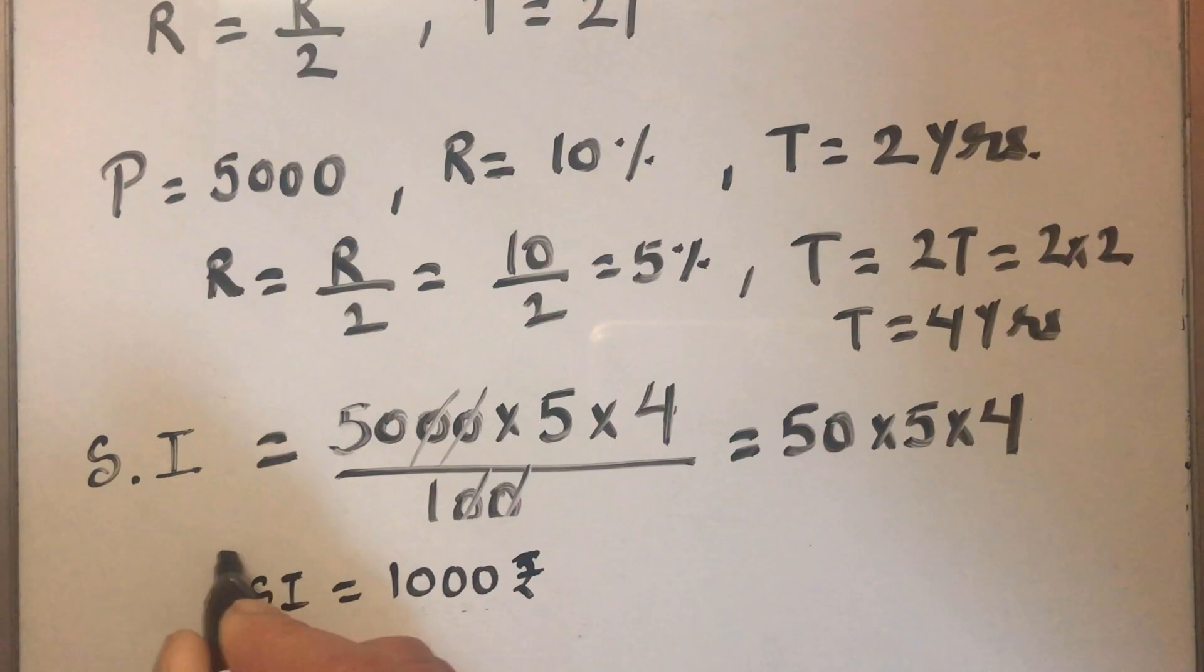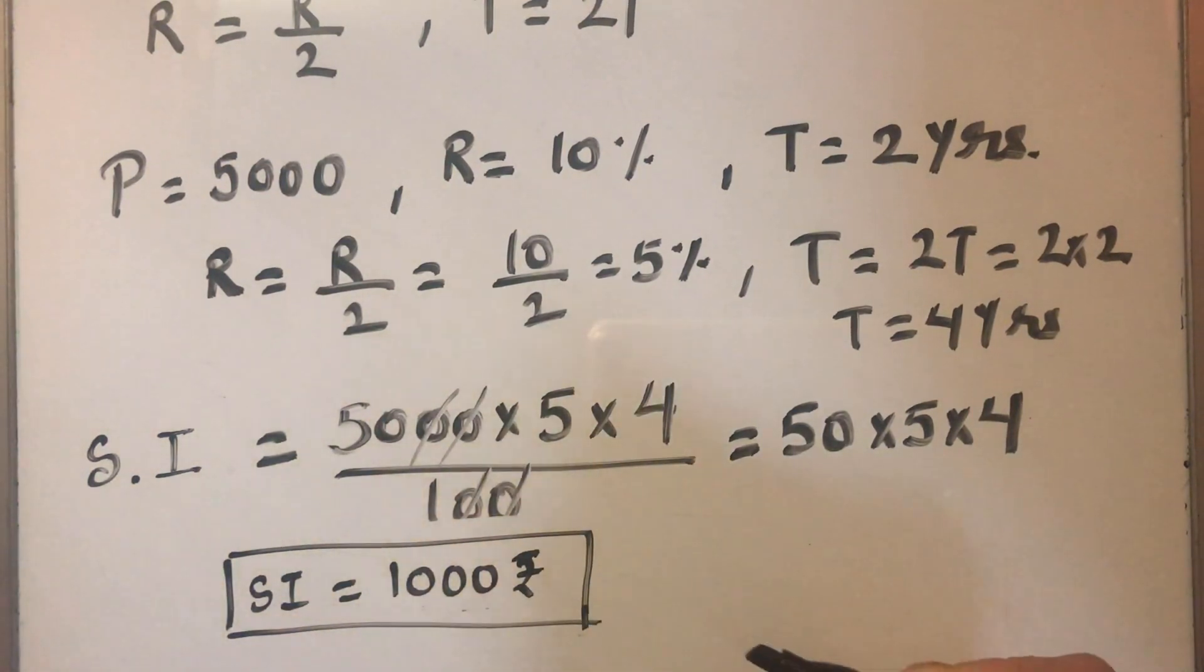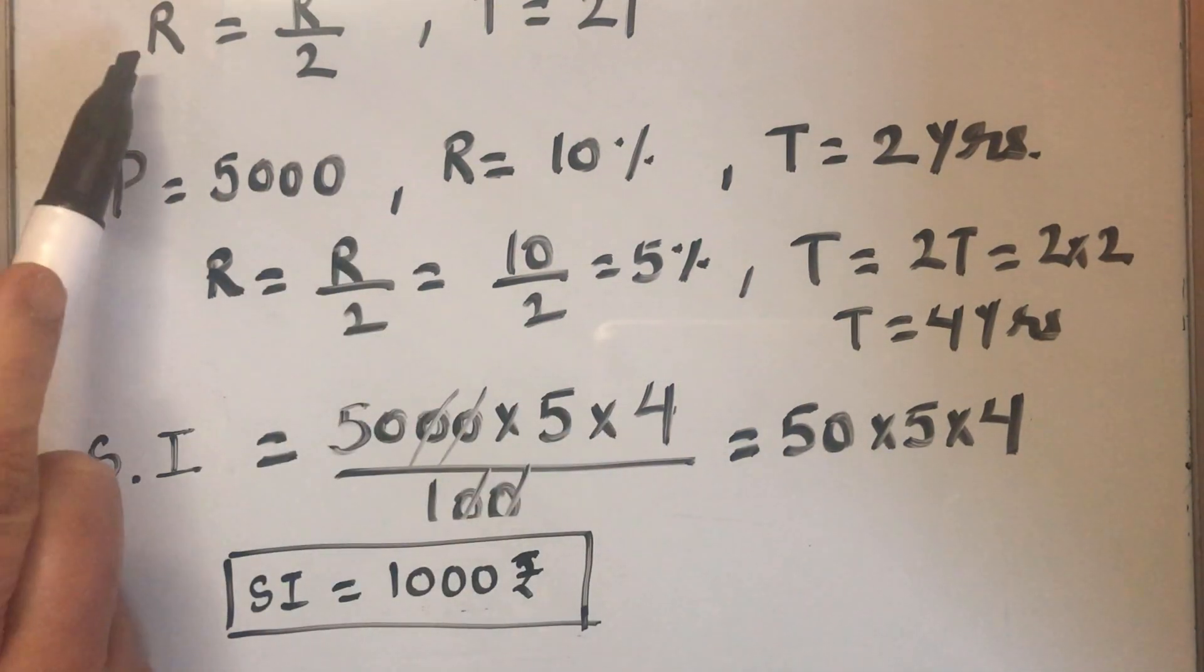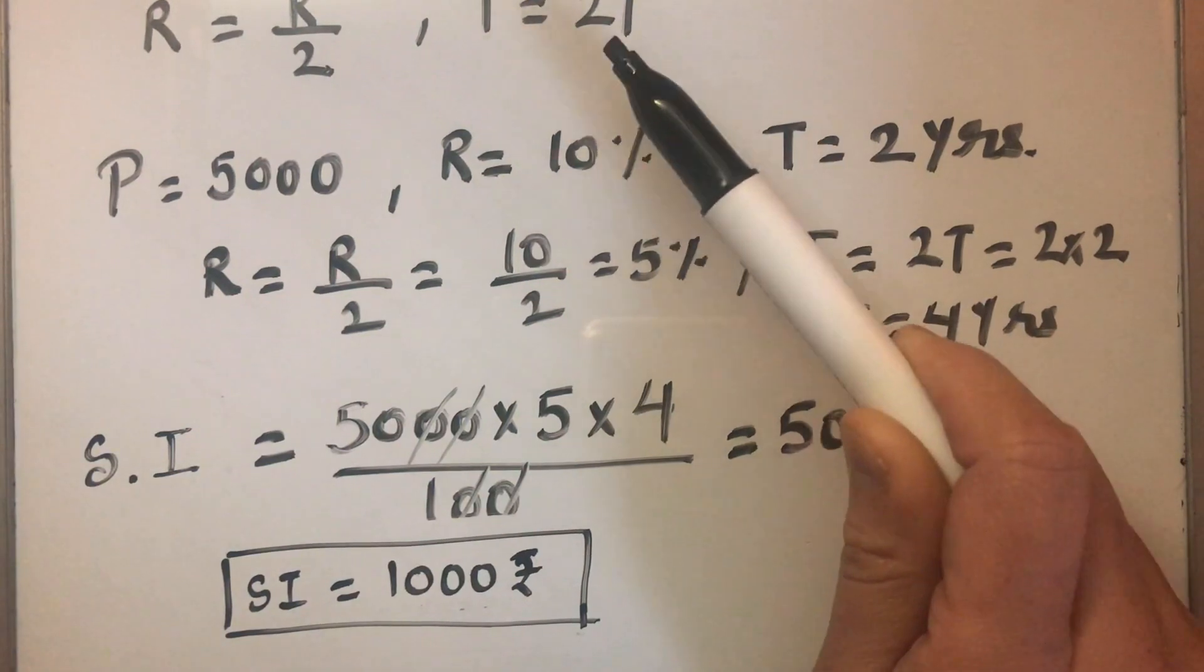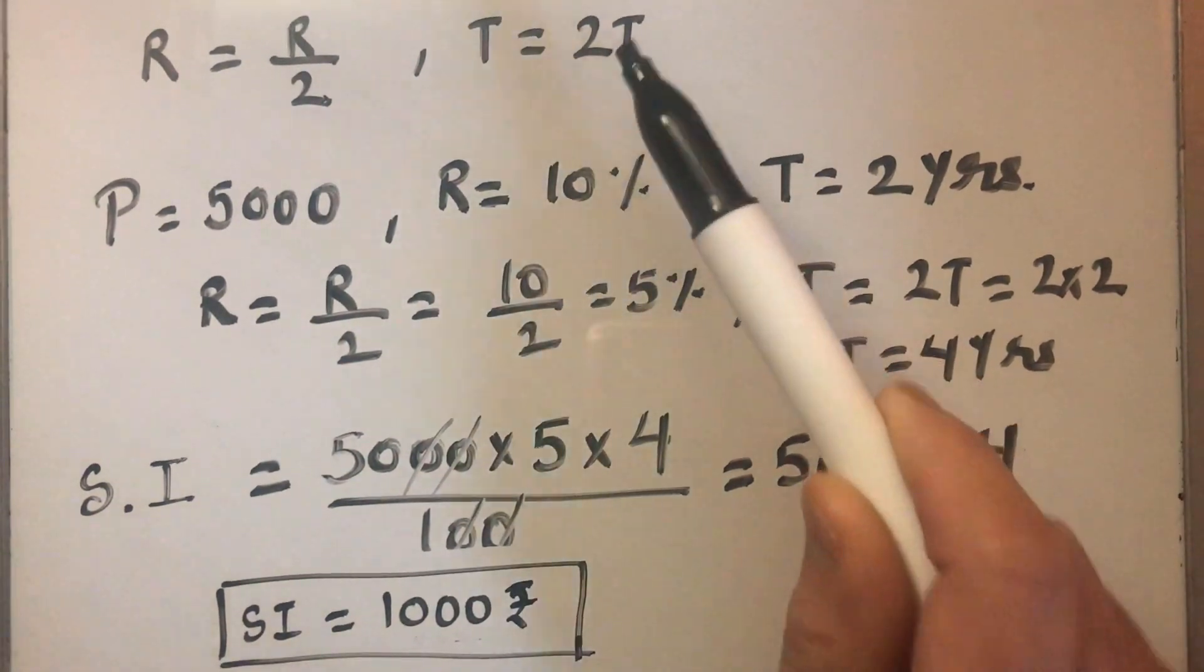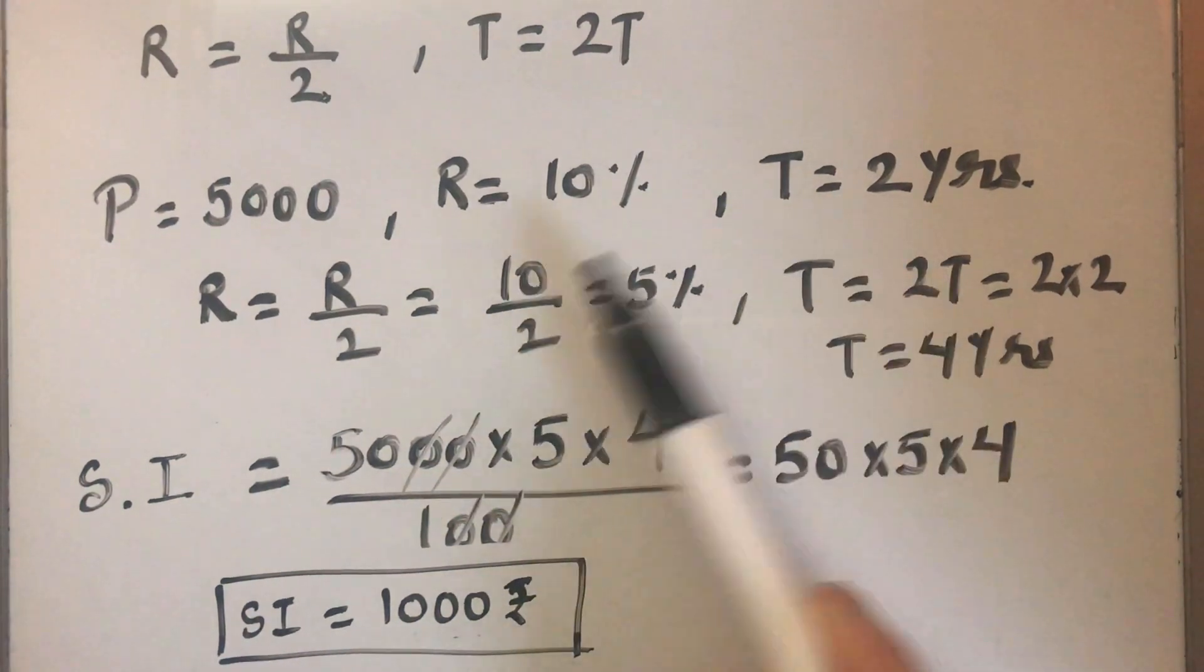So this is how we can calculate the simple interest when the rate of interest is charged half yearly. So in the formula the change will be R will become R over 2 and the time period will get doubled. That will be 2T. That's what we have to do for any values of R and T.